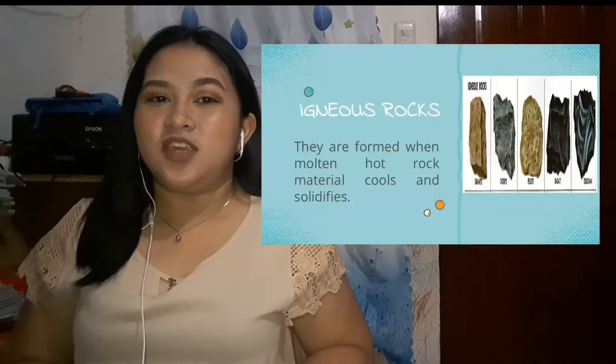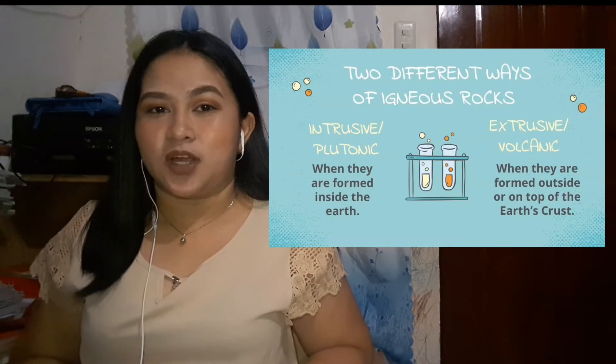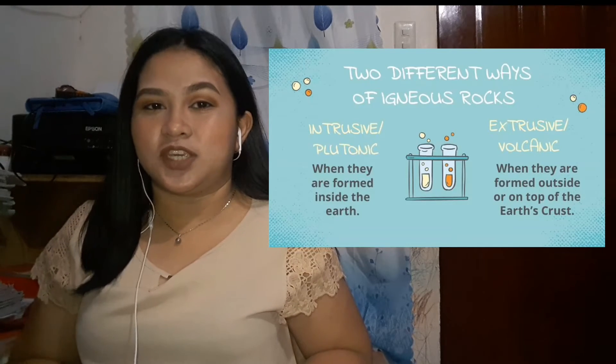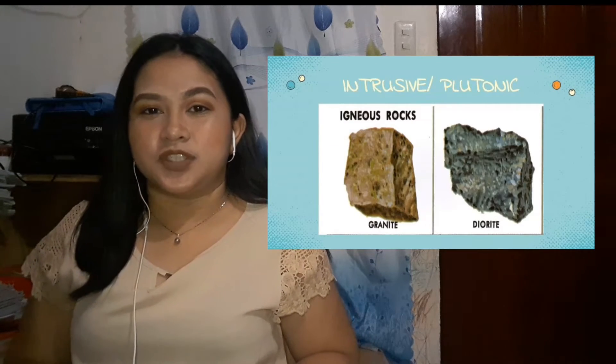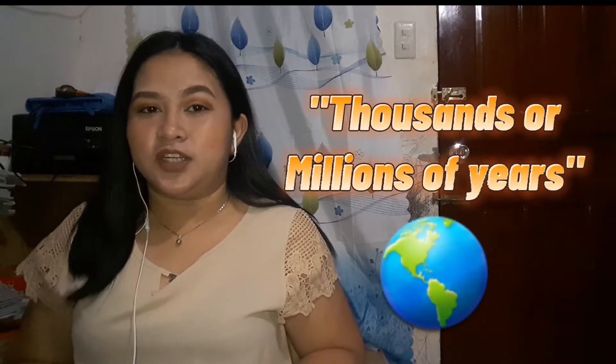Let's take a look first at igneous rocks. Igneous rocks, derived from the Latin word for fire, are formed when molten hot material cools and solidifies. Igneous rocks can be formed in a couple of different ways. When they are formed inside the earth, they are called intrusive or plutonic igneous rocks. If they are formed outside or on top of the earth's crust, they are called extrusive or volcanic igneous rocks. Granite and diorite are common examples of intrusive rocks — they have a coarse texture with large mineral grains, indicating that they spent thousands or millions of years cooling down inside the earth.